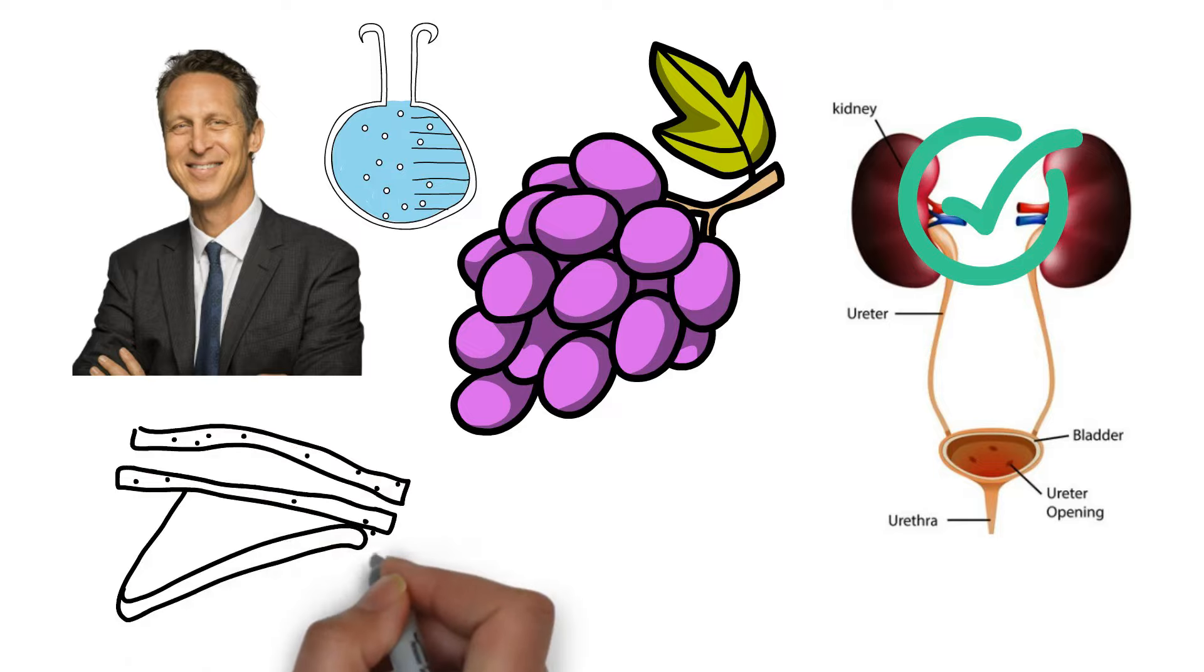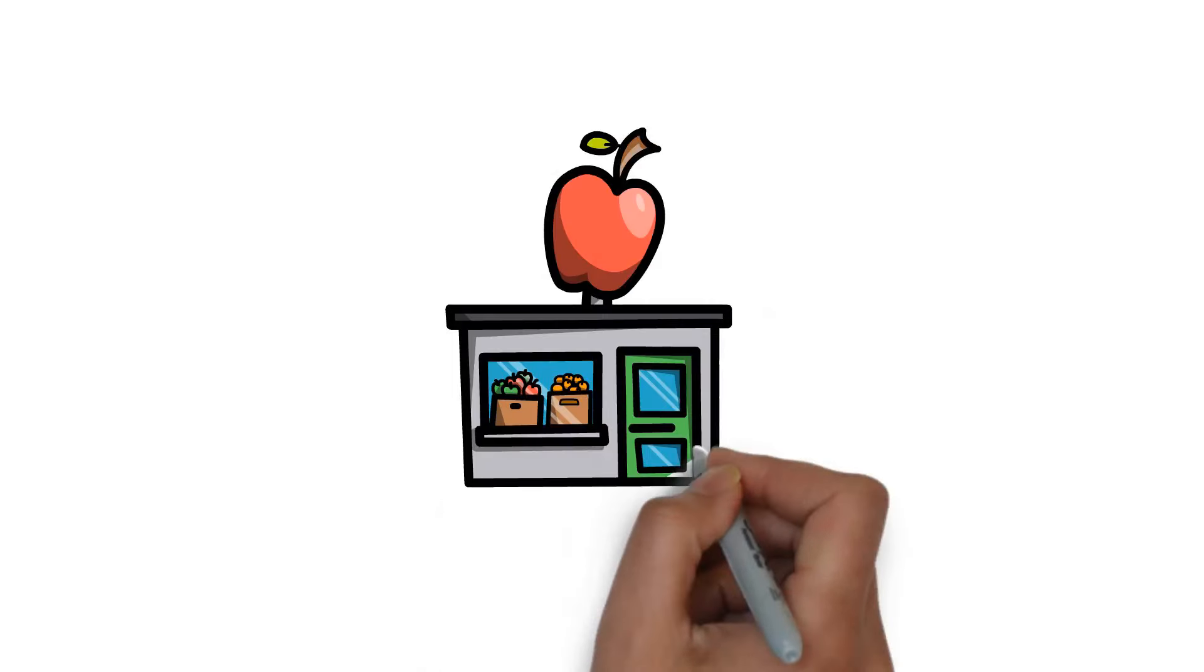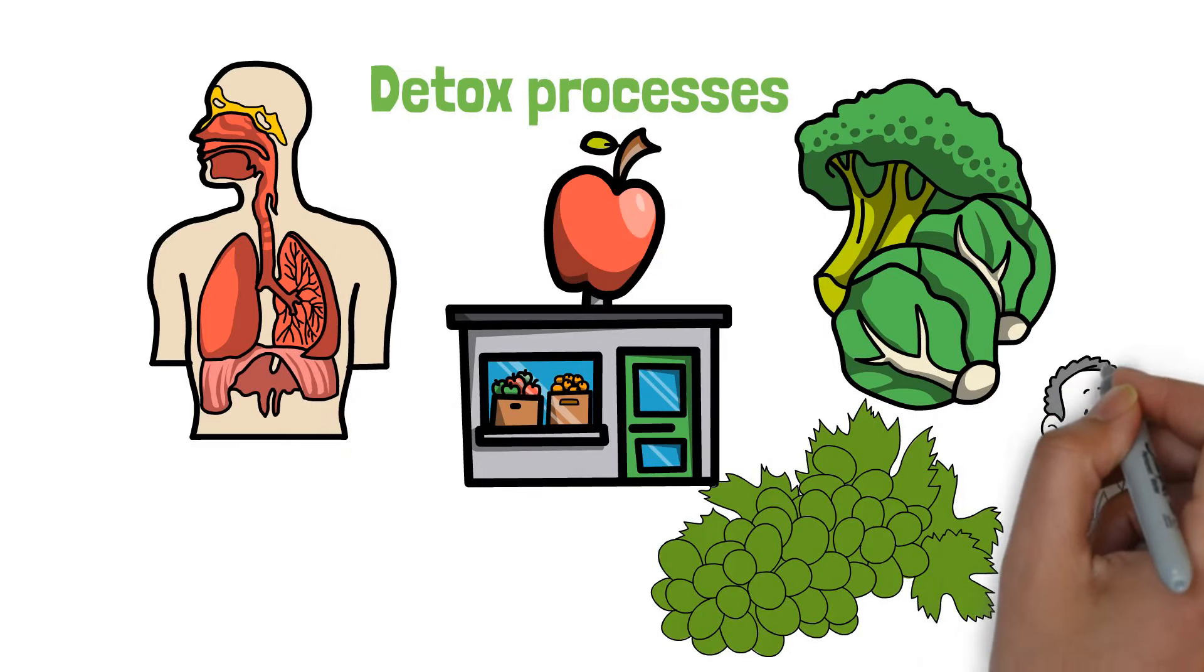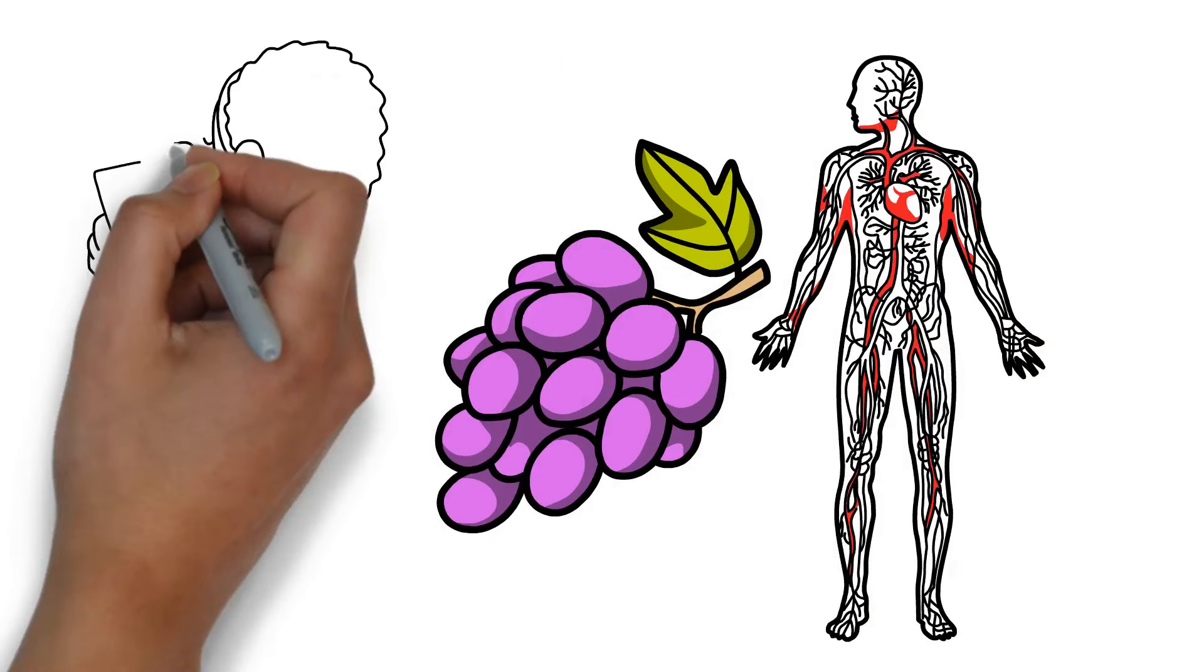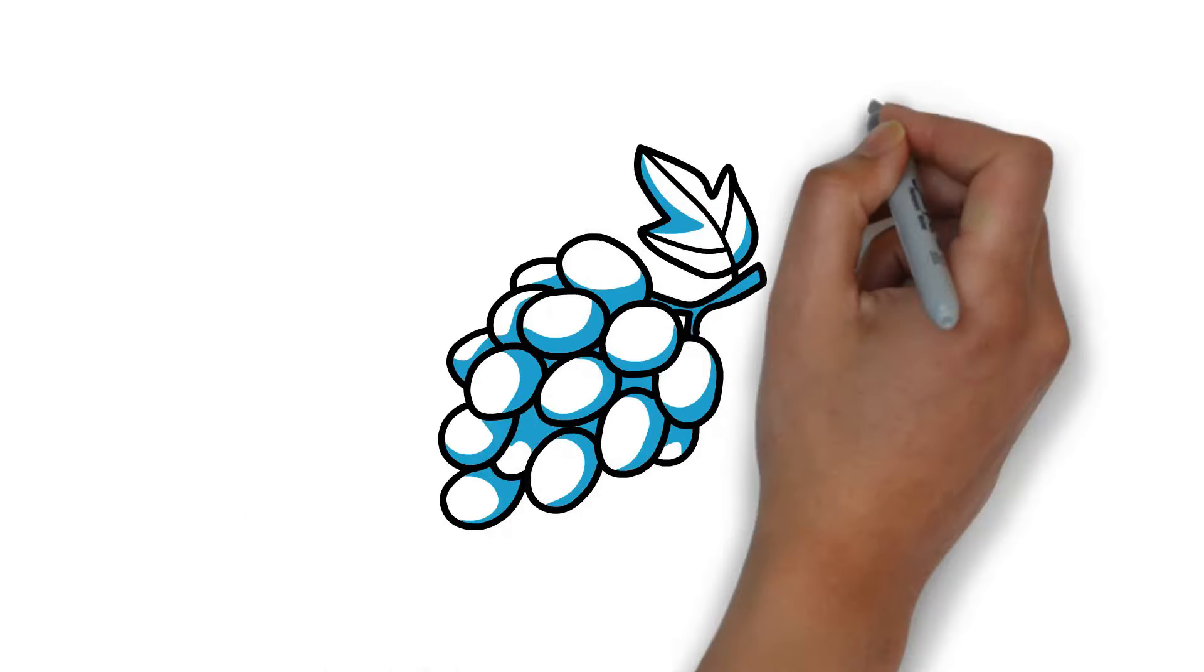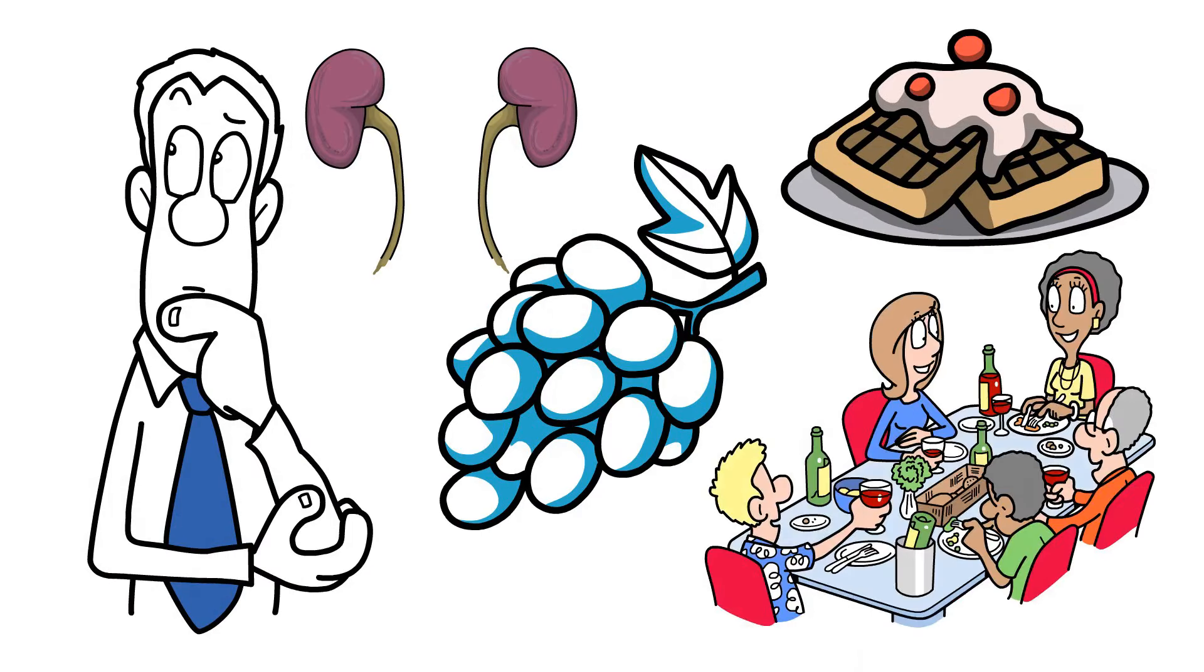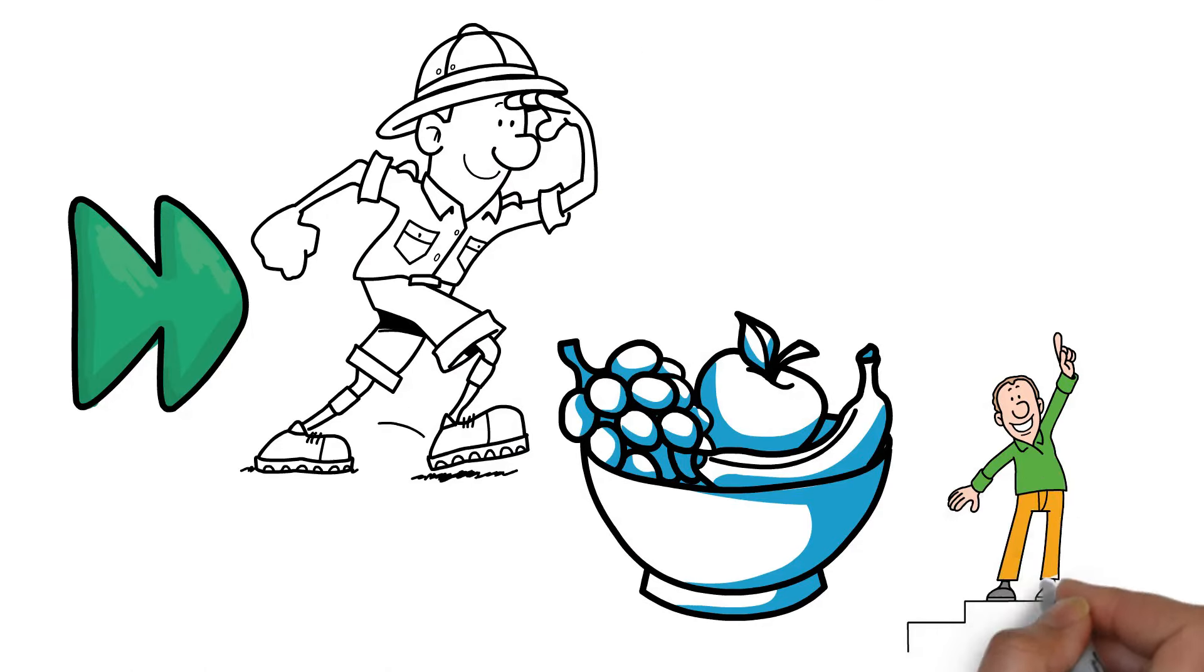Dr. Mark Hyman often emphasizes the role of whole foods in maintaining optimal health. While he advocates for a diet rich in fruits and vegetables to support the body's natural detox processes, incorporating foods like grapes aligns perfectly with his advice. Grapes offer a delicious way to hydrate and provide your body with essential nutrients for kidney health. Enjoying grapes can be as simple as snacking on them fresh or adding them to your favorite dishes. Remember, nurturing your kidneys starts with the choices you make at the dining table. Up next, we'll explore another fruit that's not only refreshing but also a champion for your kidneys.